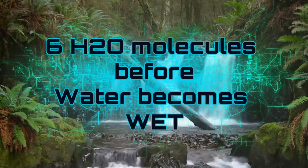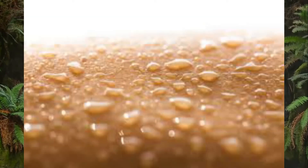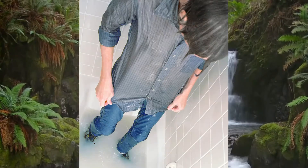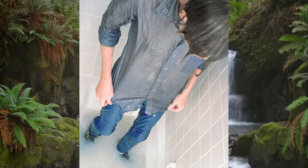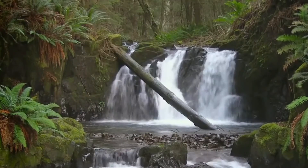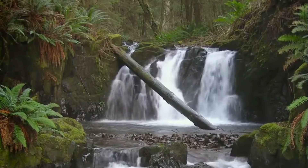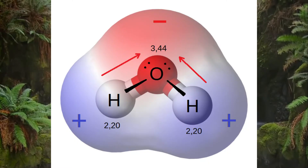If you drop water on your skin, the molecules stick to it and you become wet. If you spill water on a shirt, the fabric molecules draw the water into it and the shirt becomes wet. The positives and negatives within the water molecules are attracted to the positives and negatives in the molecules of your hand or your t-shirt — that's why they get wet.